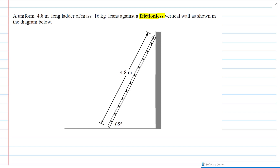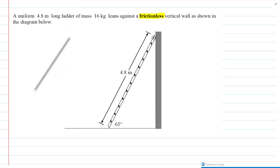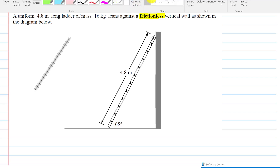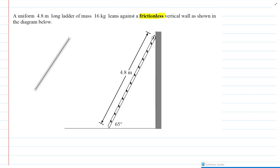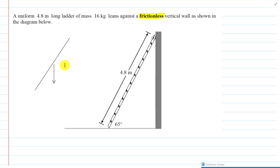We draw our straight line. The ladder has a force of gravity pulling down on it, and that force of gravity is attached to the center of the ladder. Why is it at the center? Because of the word 'uniform,' meaning the mass is uniformly distributed throughout it - it is balanced in the middle.